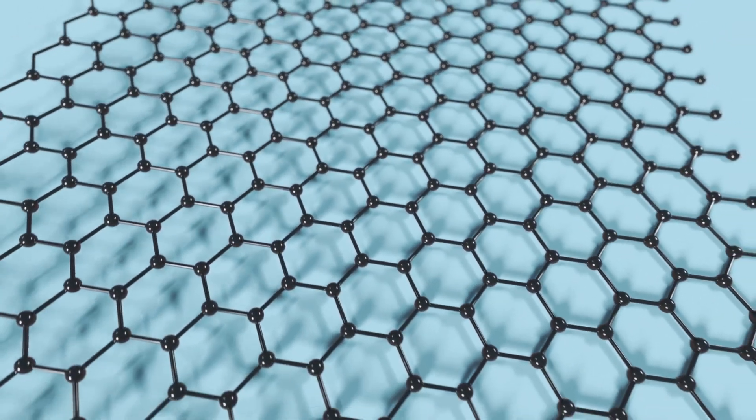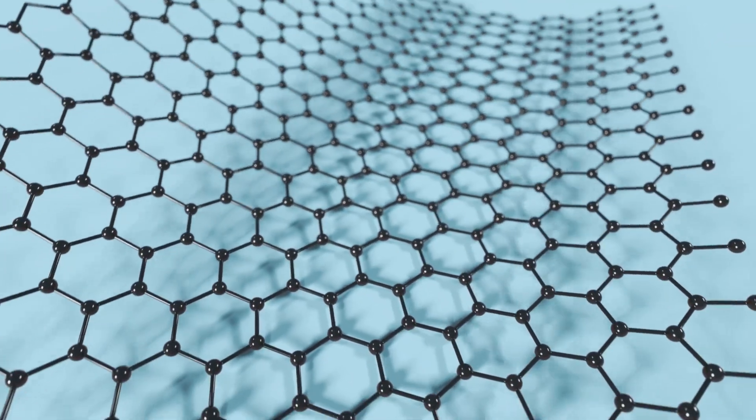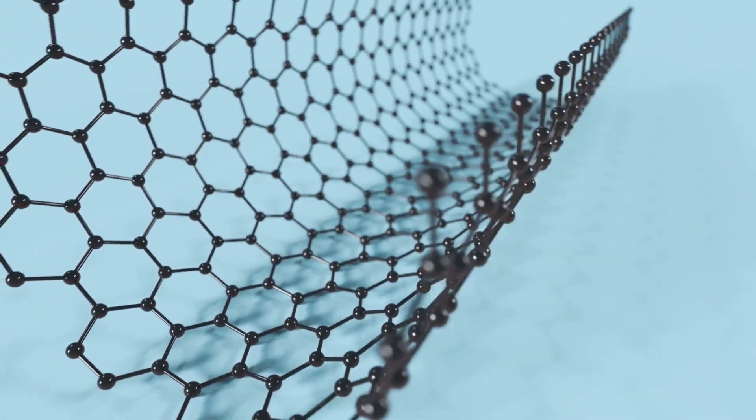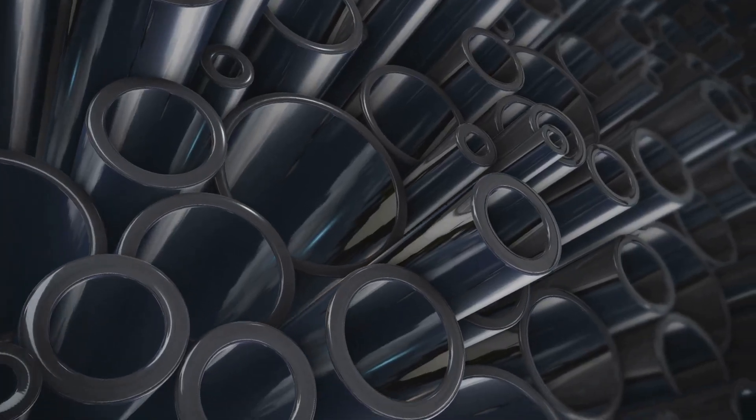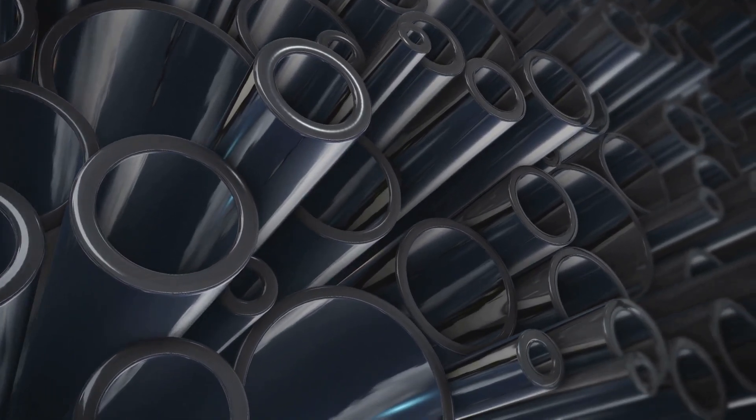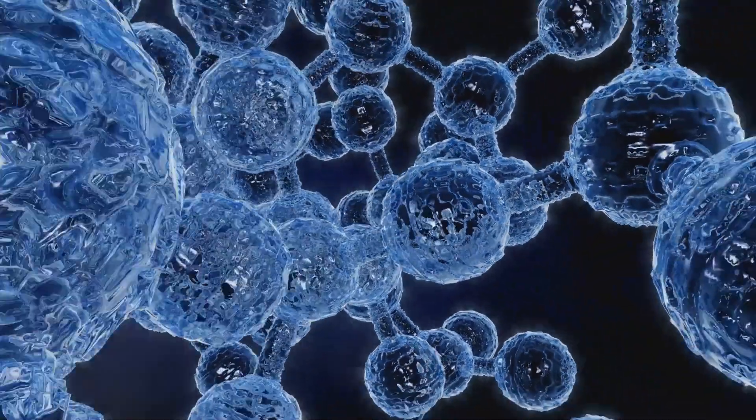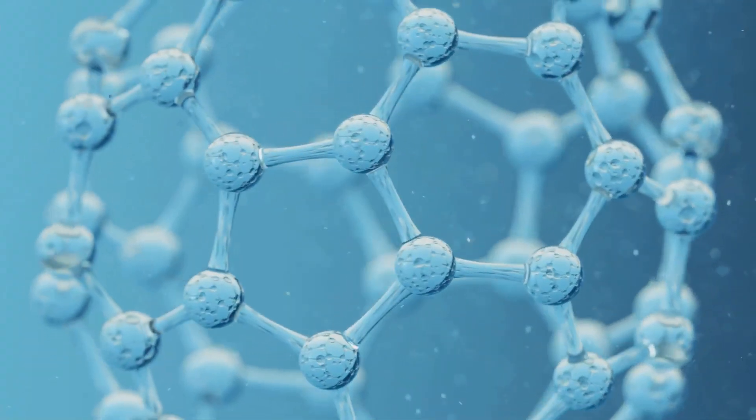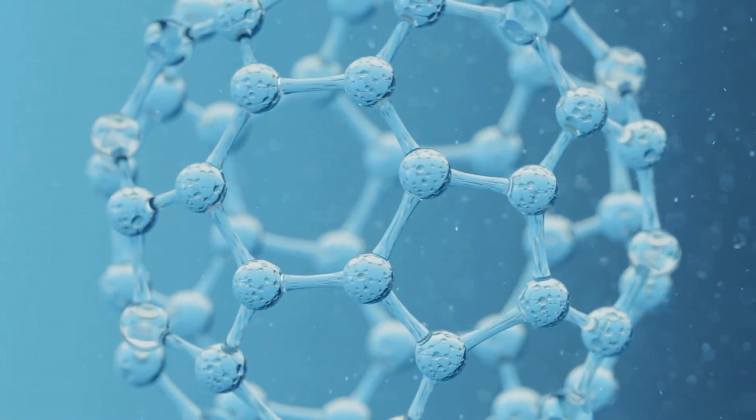Visualize a single sheet of carbon atoms meticulously arranged in a repeating hexagonal pattern, resembling a honeycomb, then seamlessly rolled to form a perfect continuous cylinder. That, in its essence, is a carbon nanotube. Elegant in its simplicity, yet extraordinary in its potential.